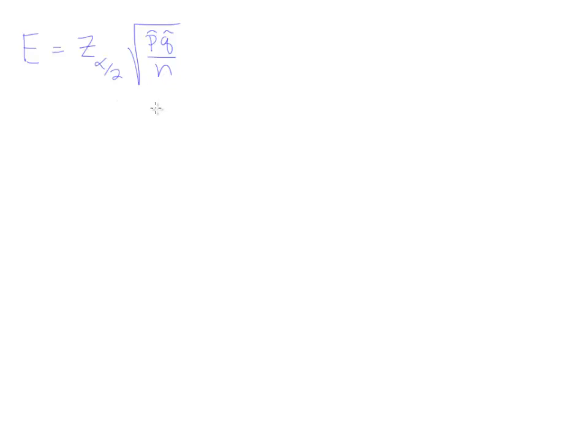If we solve this formula for N, we will have the sample size formula for estimating a proportion. To do that, we're going to get N by itself. The first step is to divide both sides by this Z term. We're going to divide Z alpha divided by 2 into both sides. This term and this term will cancel out, and you're going to end up with E over Z alpha divided by 2 equals the square root of P hat Q hat over N.